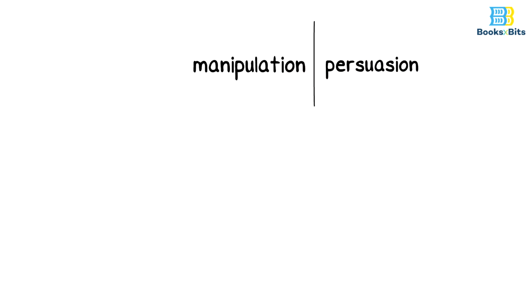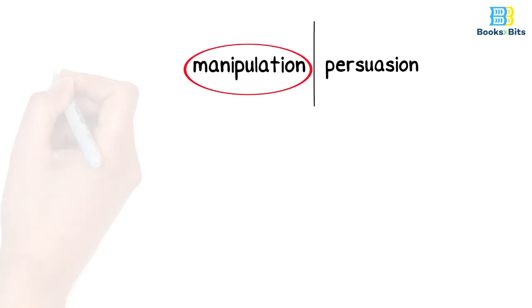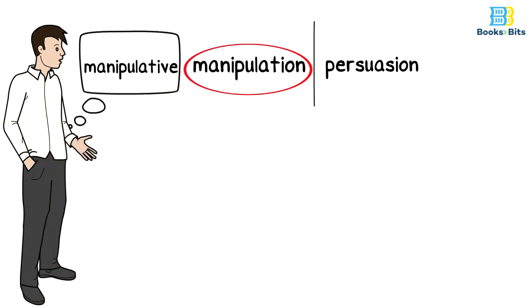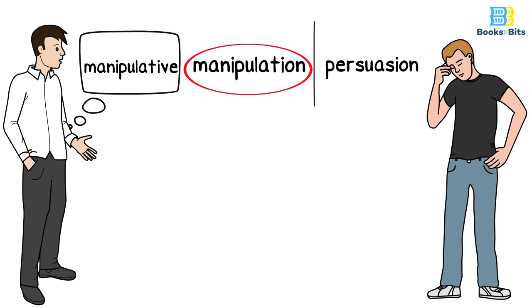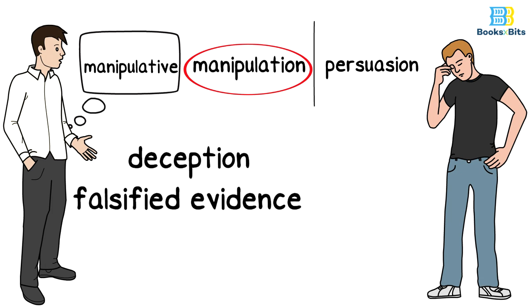We must distinguish between manipulation and persuasion so that they are not confused. In essence, manipulation focuses on the manipulative person without regard to the outcome of this or its impact on the person that he is manipulating. Also, the art of deception through falsified evidence is considered one of the pillars of manipulation.